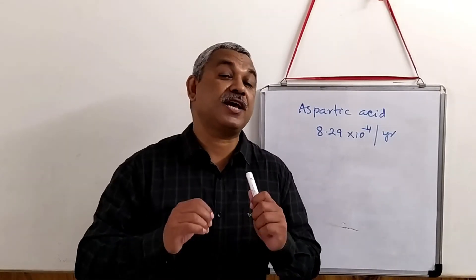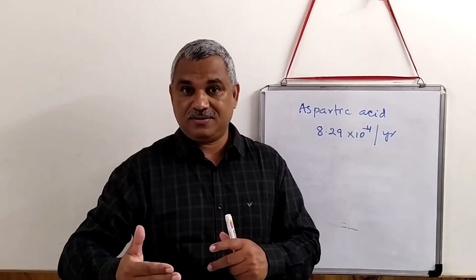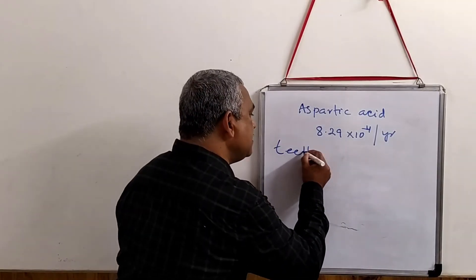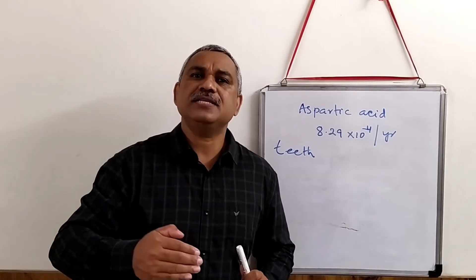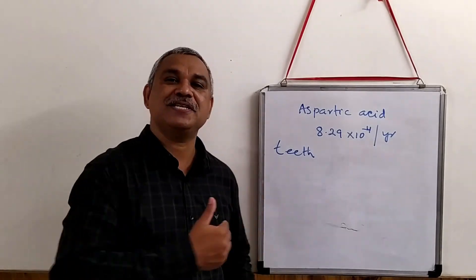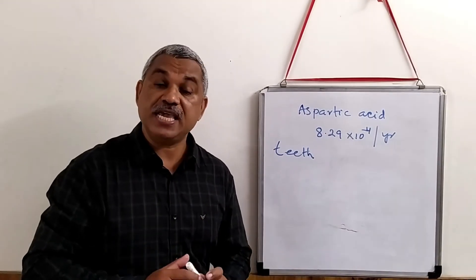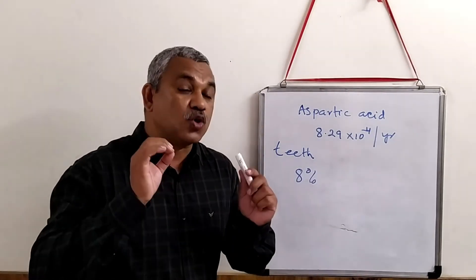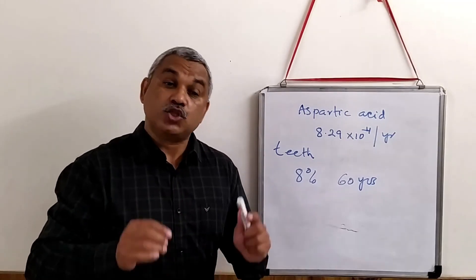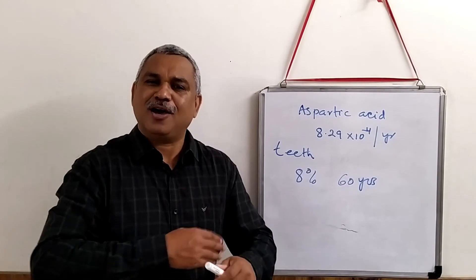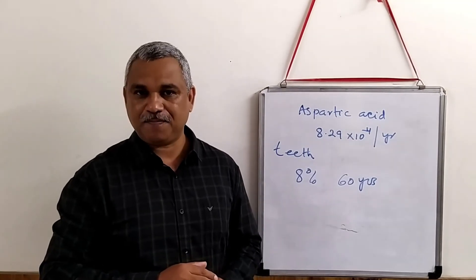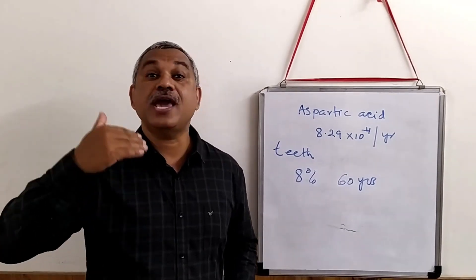Racemization increases with age. They looked at certain proteins - for example, they took teeth enamel and tried to find the rate of racemization happening in it. They digested the teeth and tried to find the racemization occurring. What they observed is about 8% of the total aspartic acid gets racemized in about a 60-year period in teeth. Based on this observation, they concluded this is the rate constant for racemization of aspartic acid, and this has been used for determining the age of organisms.